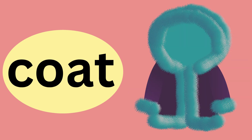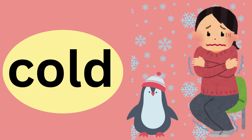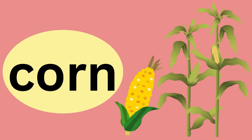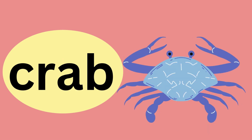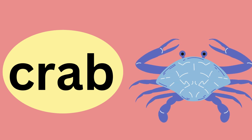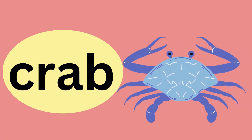Coat — we sound it out as k-o-t. C says k. Cold — we sound it out as k-o-l-d. C says k. Corn — we sound it out as k-o-r-n. C says k. Cow — we sound it out as k-a-w. C says k. Crab — we sound it out as k-r-a-b. C says k.